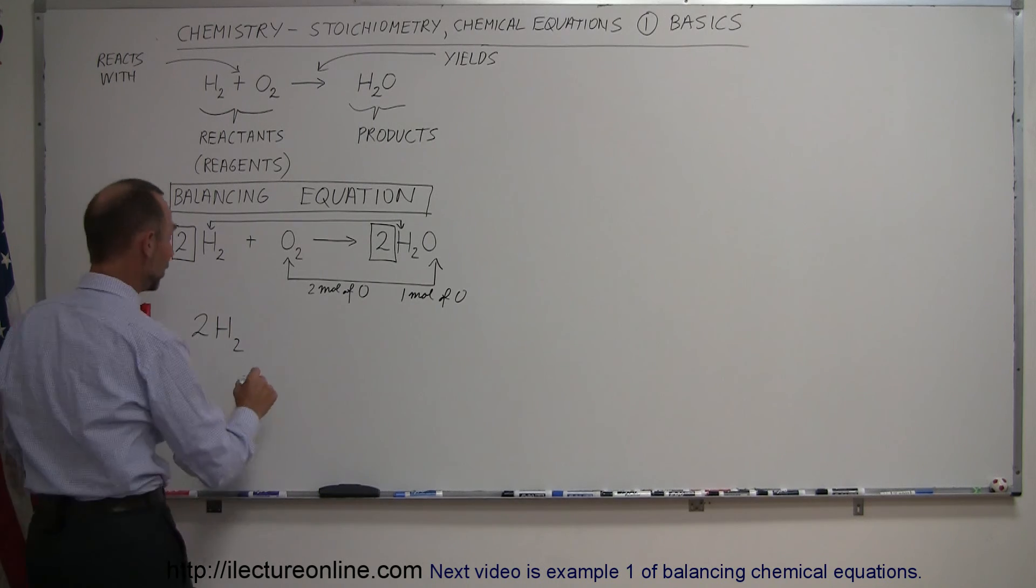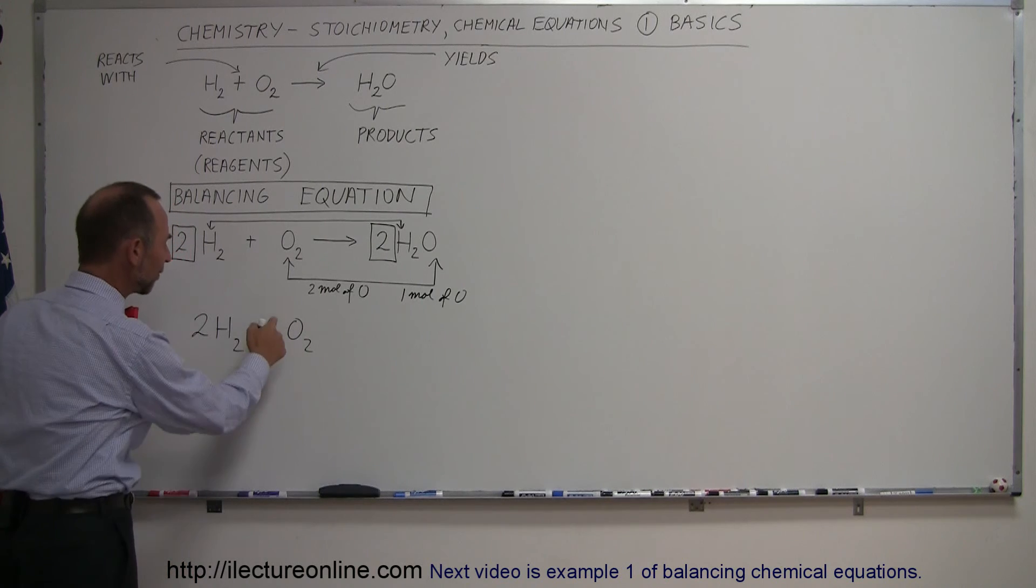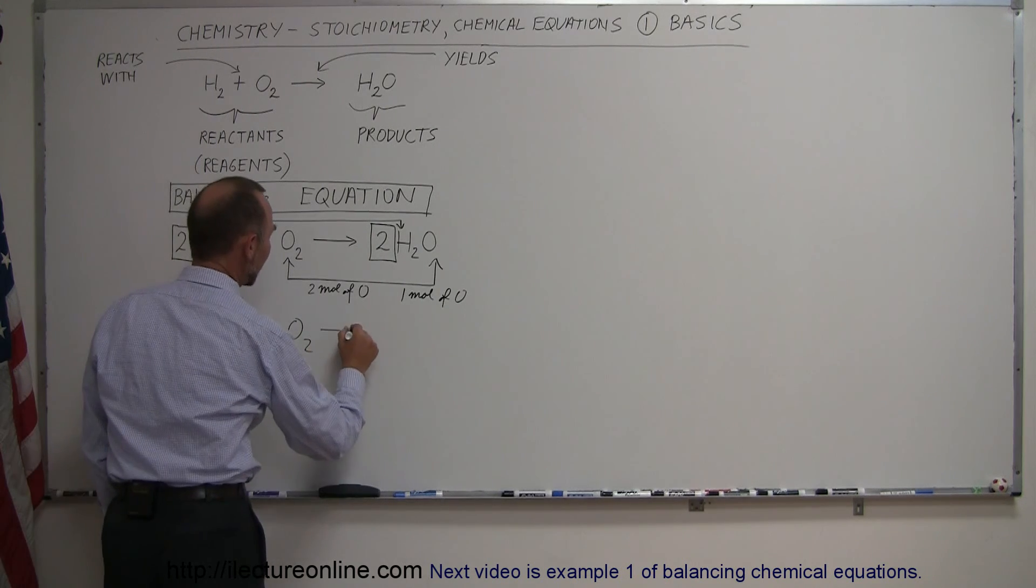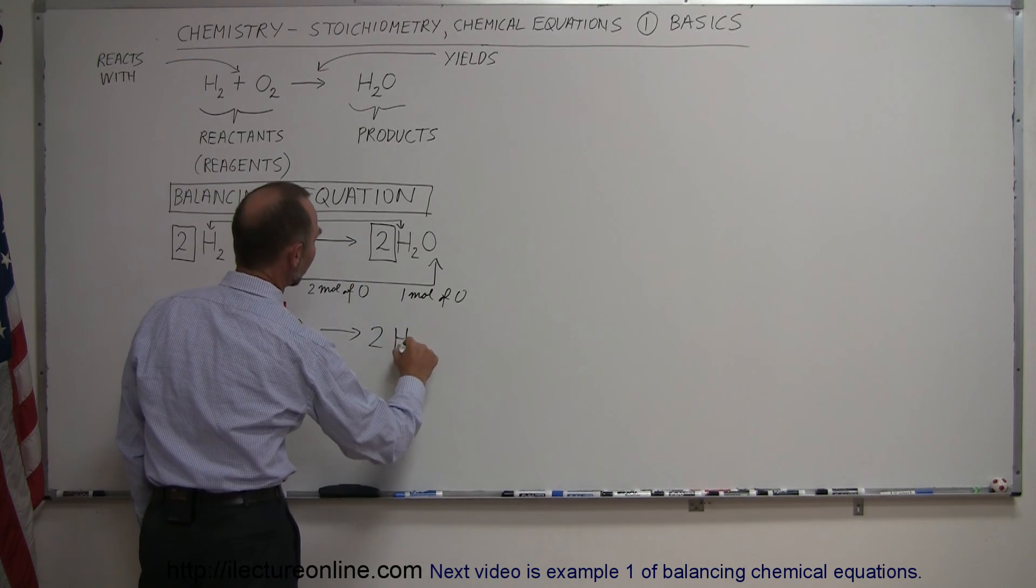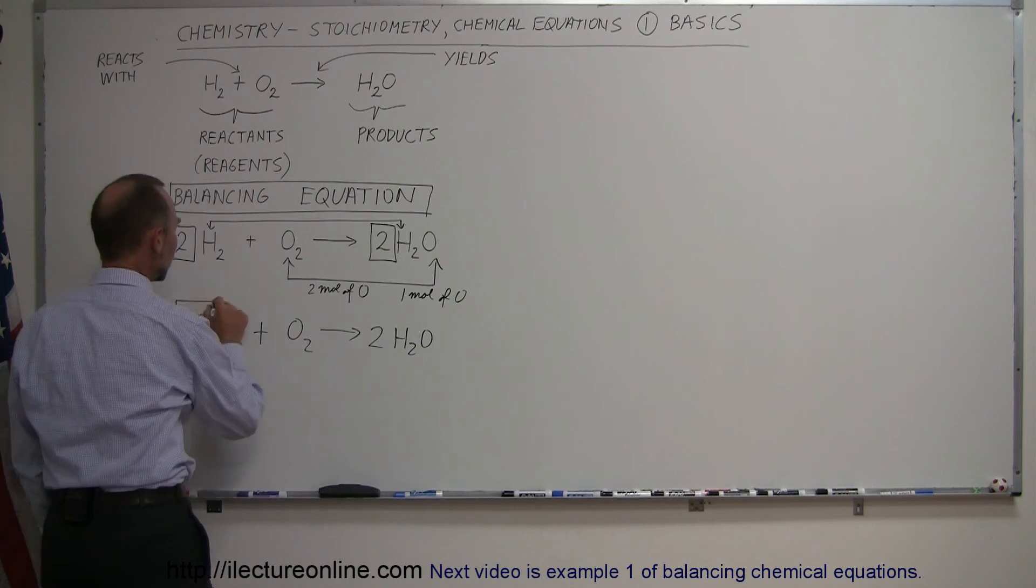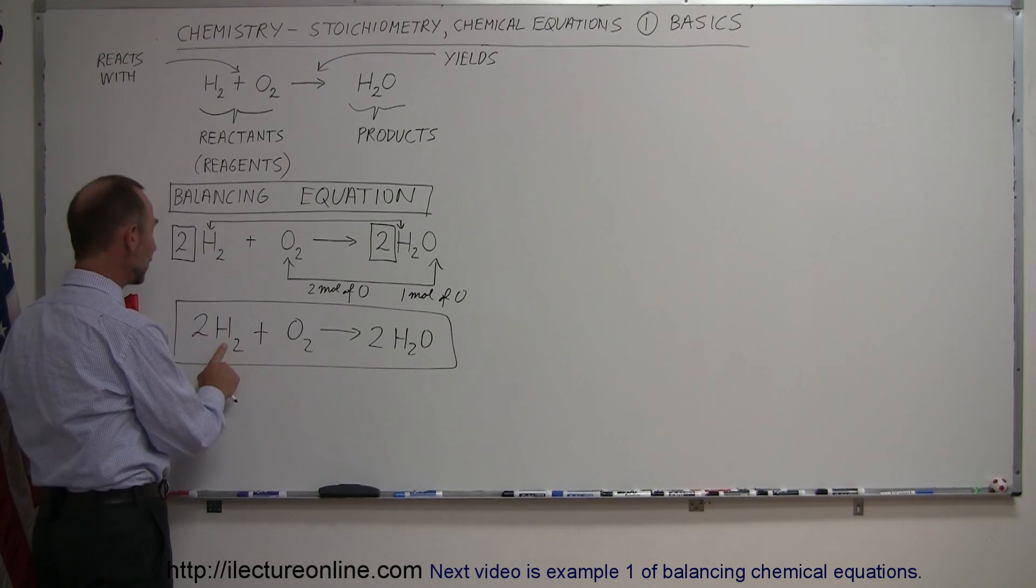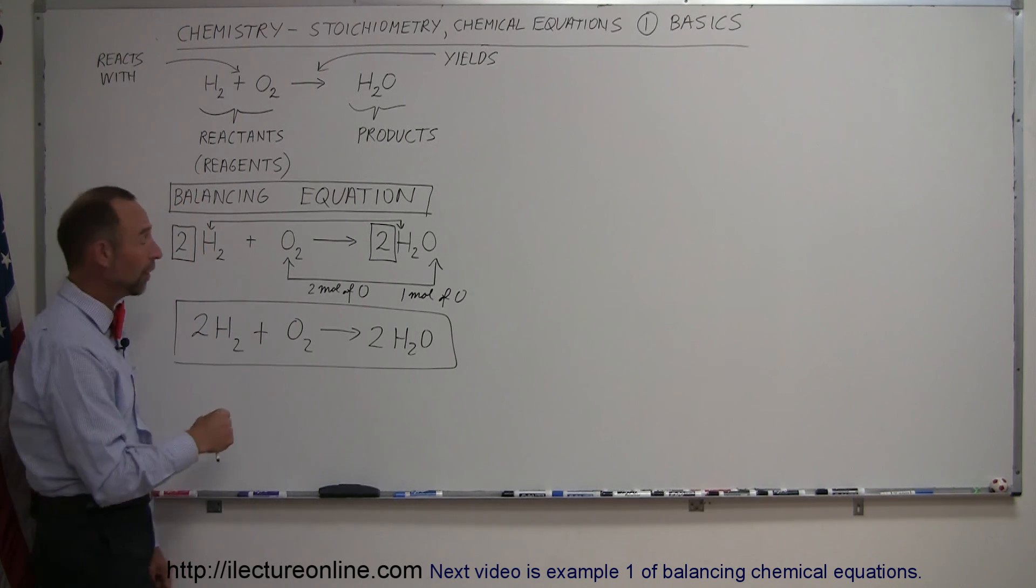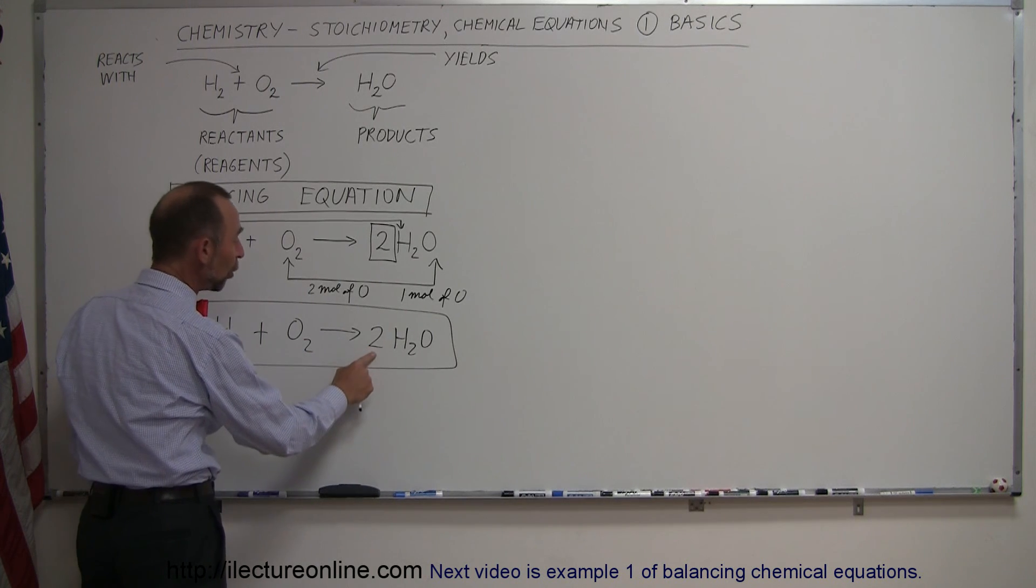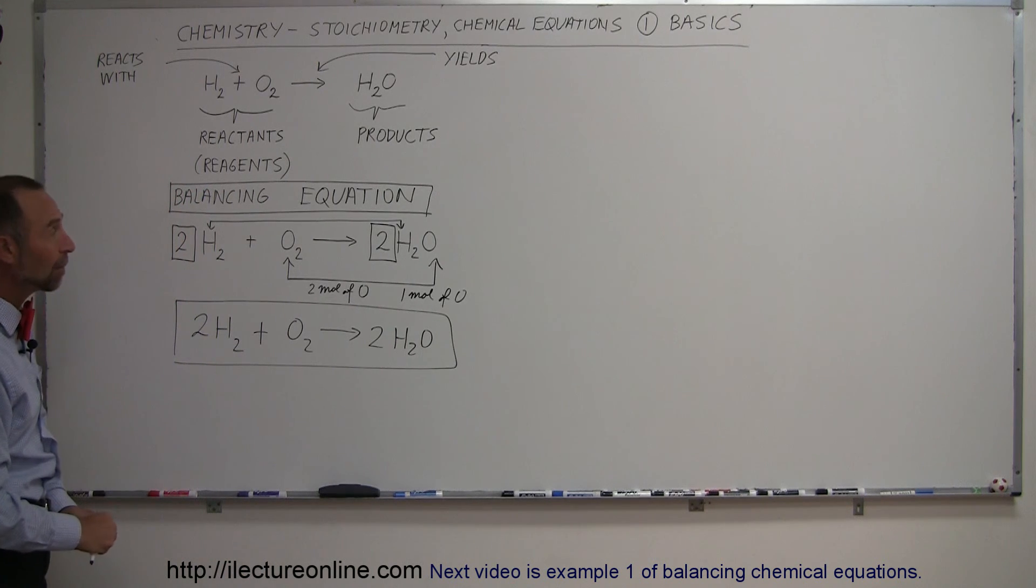So the end equation is that we start out with two moles of hydrogen gas, a total of four moles of hydrogen atoms, plus one mole of oxygen gas. Just like in algebraic expressions, you do not have to put a one there if you don't want to. This reacts with oxygen and yields two moles of H2O, and now this equation is a balanced equation. And so again, the way we read that, we start out with two moles of hydrogen gas, a total of four moles of hydrogen atoms, we react that with one mole of oxygen gas, which is two moles of oxygen atoms, and that yields two moles of H2O, which is two moles of water molecules, and that's how we balance equations.